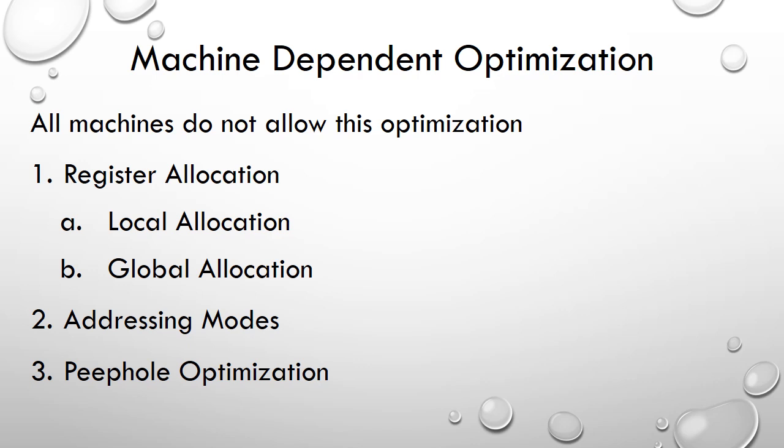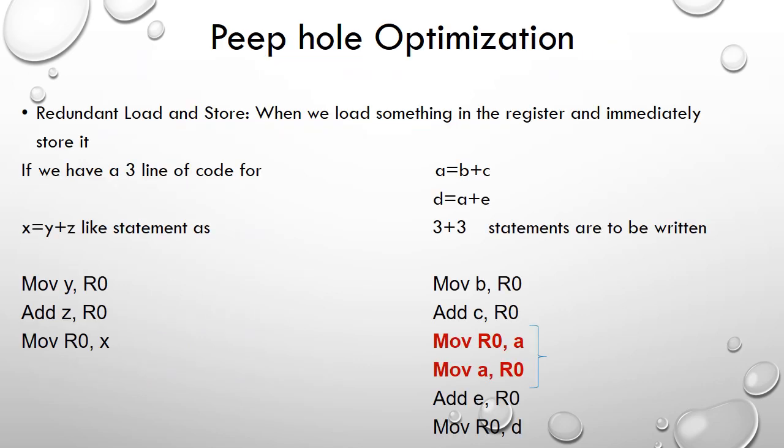Addressing modes also play an important role in machine-dependent optimization. By changing the addressing mode we can save statements or reduce the number of executions of statements. Now, regarding peephole optimization techniques, we have four different methods by which we can reduce the number of lines of code.